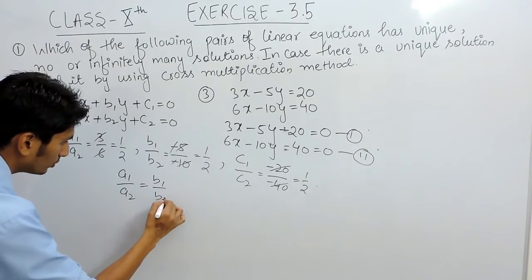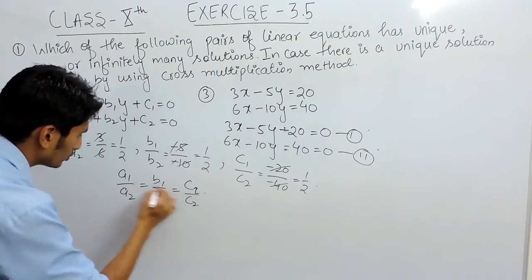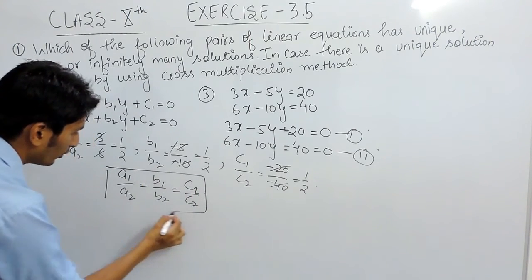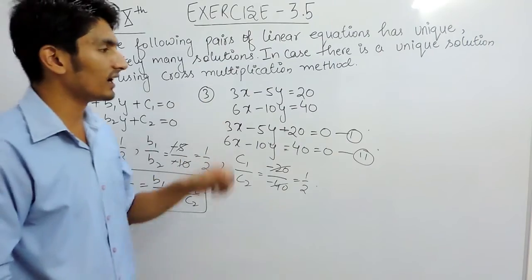Because all the ratios are equal, a1 upon a2 equals b1 upon b2 equals c1 upon c2. So we know that this is the case for coincident lines.